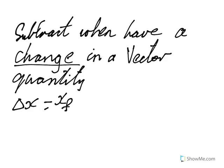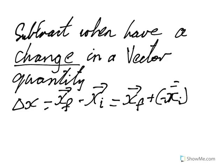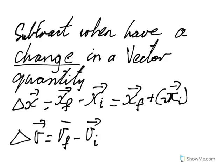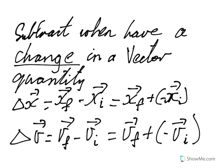change in position is the final minus the initial. Which because they're vectors, it's the final plus the negative of the initial. And similarly, if you want your changing, that'll be a vector velocity. So we want our final velocity minus our initial, which again is our final plus the negative of the initial.